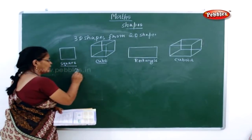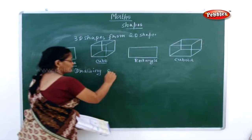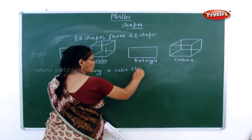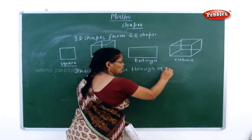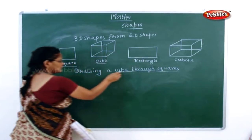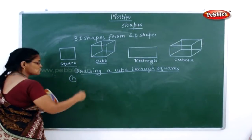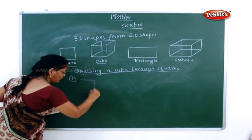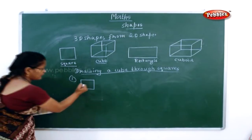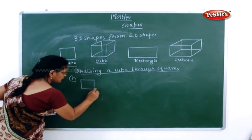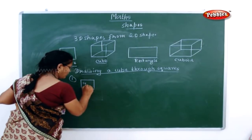You have to draw the cube. Drawing a cube through squares - now how will you draw a cube through squares? This is what we are going to do now. The first step: draw a square on the sheet of paper.